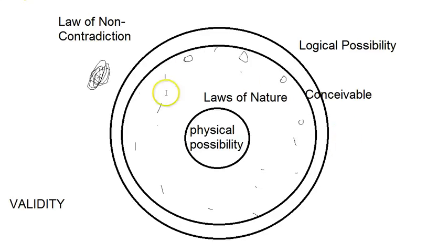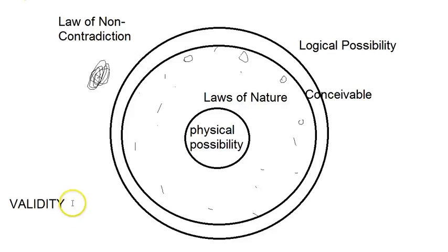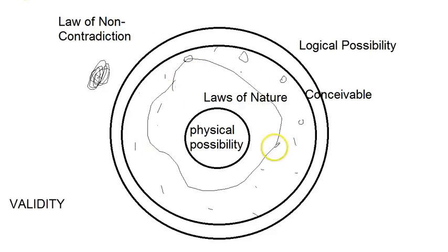What we had to do was try to cover all this possible world space with our imagination — try to conceive of a counterexample to an argument's validity. If we couldn't conceive of one, then we'd say the argument's valid. But that's problematic because our imagination is only able to cover some of the ground of what is logically possible. Our imaginations are limited. There are some really funky arguments that are actually invalid, although their counterexamples might not be things you'd commonly think about.